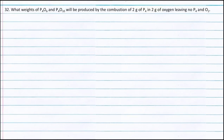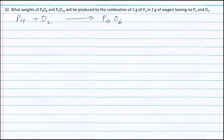Question 32. What weights of P4O6 and P4O10 will be produced by the combustion of 2g of P4 in 2g of oxygen, leaving no P4 and oxygen? P4 reacts with oxygen to form P4O6. Balancing the equation: 1 mole of P4 reacts with 3 moles of oxygen to form 1 mole of P4O6.